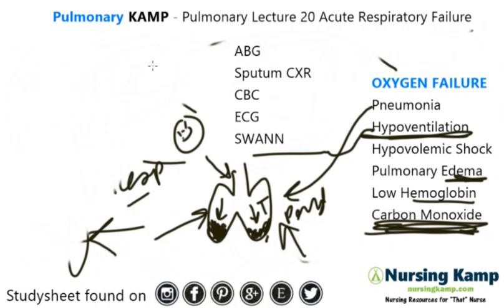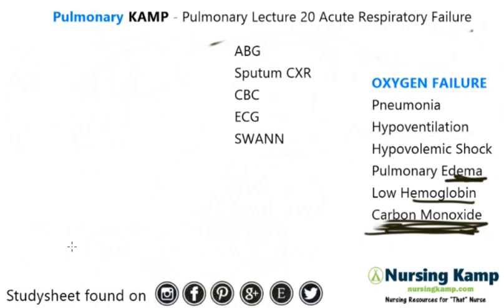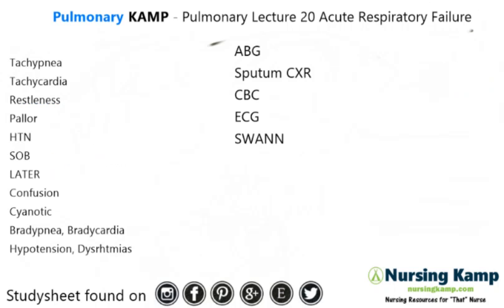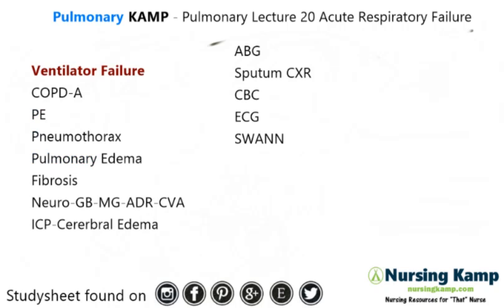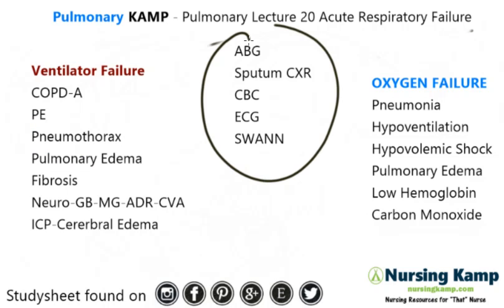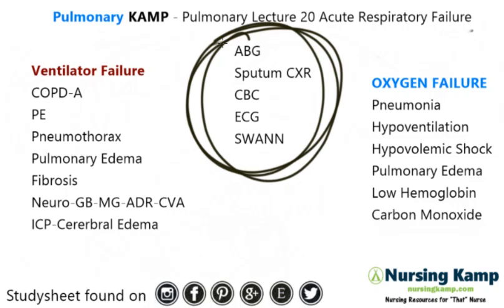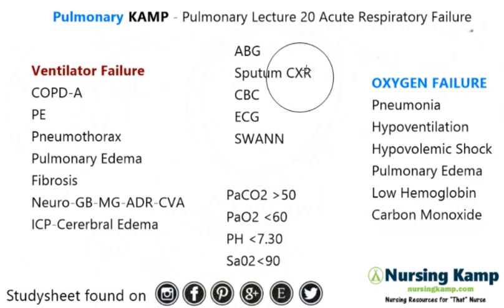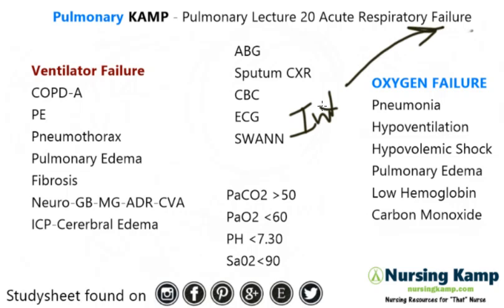So we either have a ventilator failure or an oxygen failure, and it shows signs and symptoms of respiratory distress. We draw ABGs because we've already seen the signs and symptoms and now we're trying to figure out if it's truly failure. There's a formula from the ABG with certain criteria that result in respiratory failure — and if the patient is in respiratory failure, they need to be intubated. These are the blood gases under which someone will be intubated.